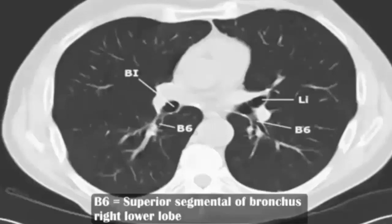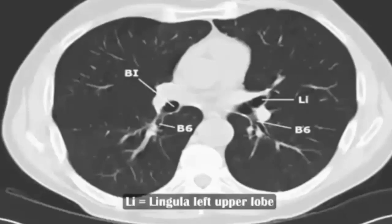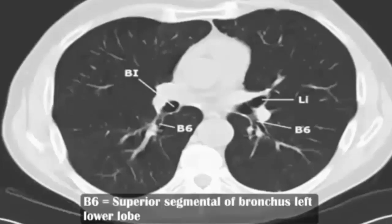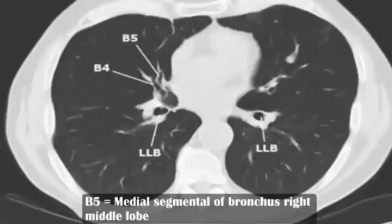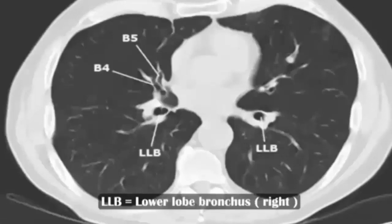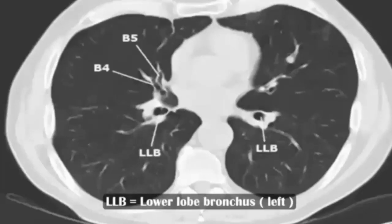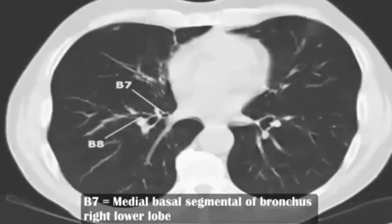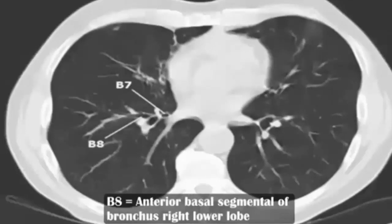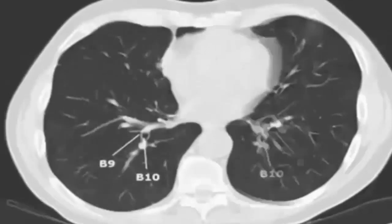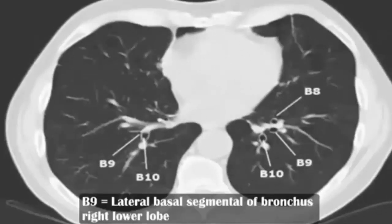B6: superior segment of bronchus, right lower lobe. LMB: left upper lobe. B6: superior segment of bronchus, left lower lobe. B5: medial segment of bronchus, right middle lobe. B4: lateral segment of bronchus, right middle lobe. LLB: lower lobe bronchus left. B7: medial basal segment of bronchus, right lower lobe. B8: anterior basal segment of bronchus, right lower lobe. B9: lateral basal segment of bronchus, right lower lobe.